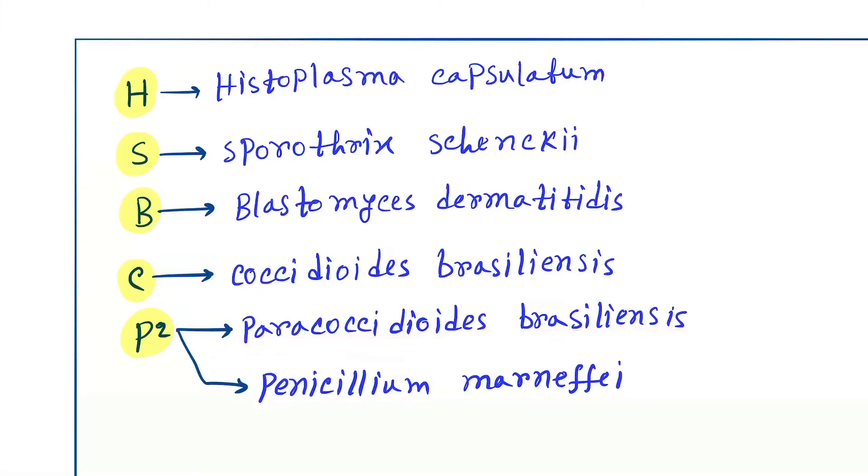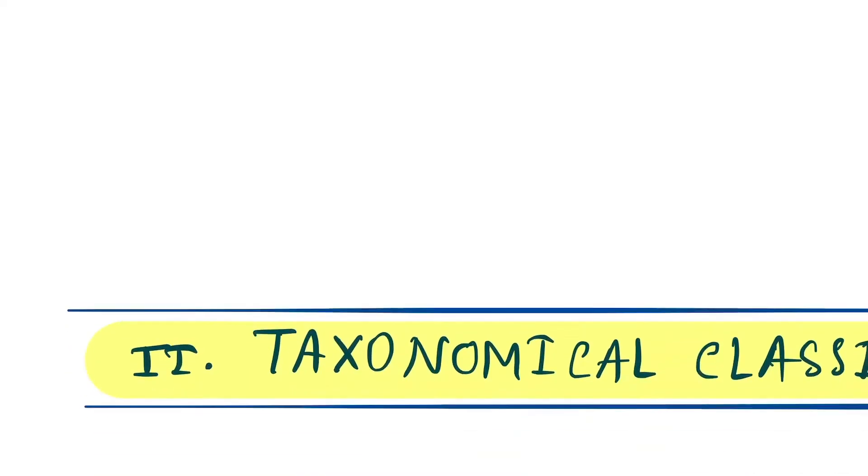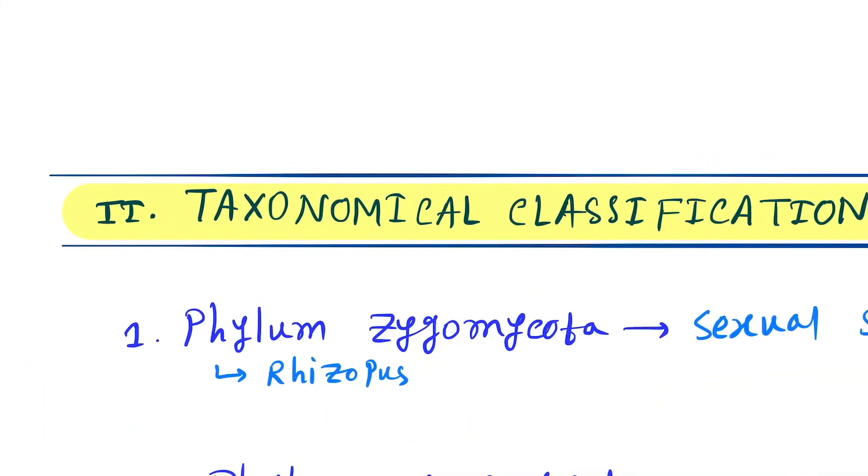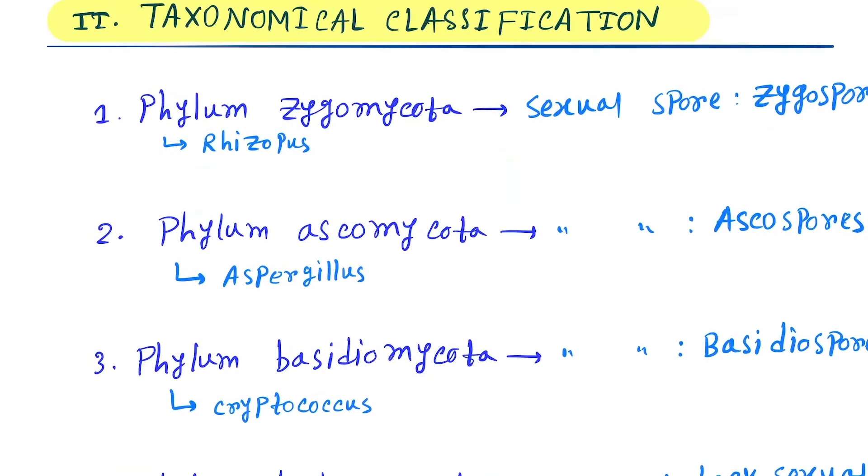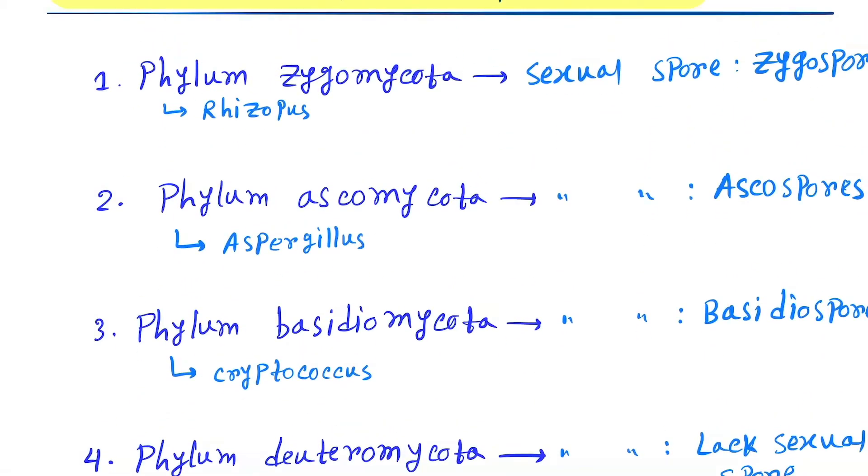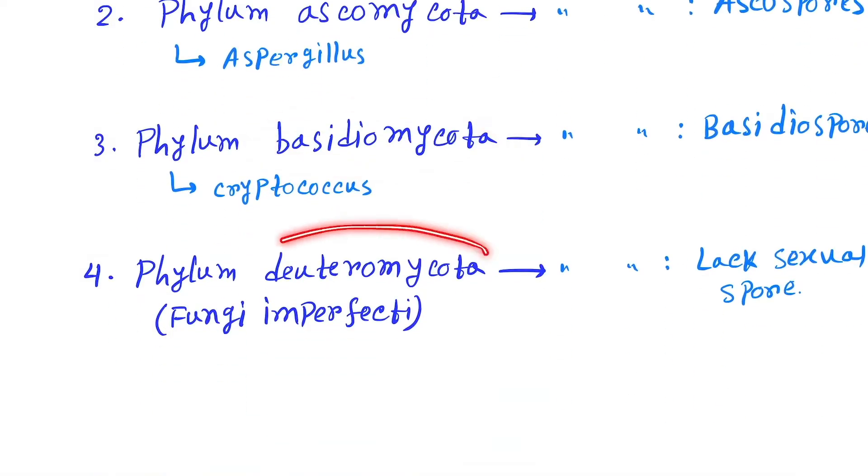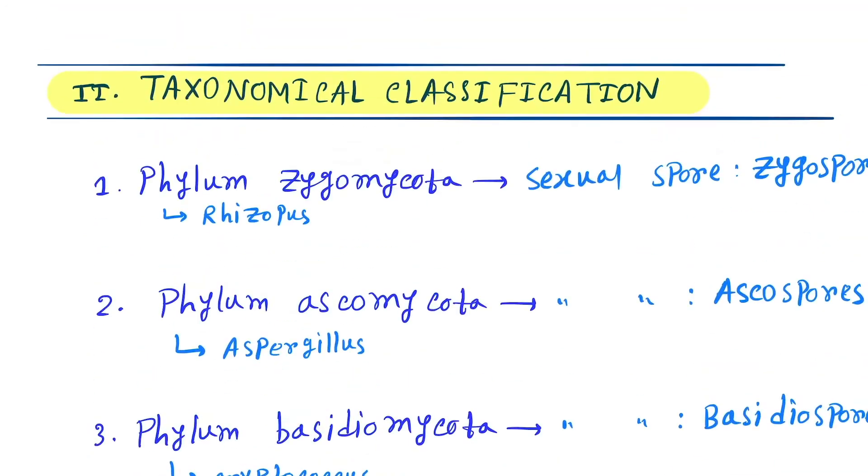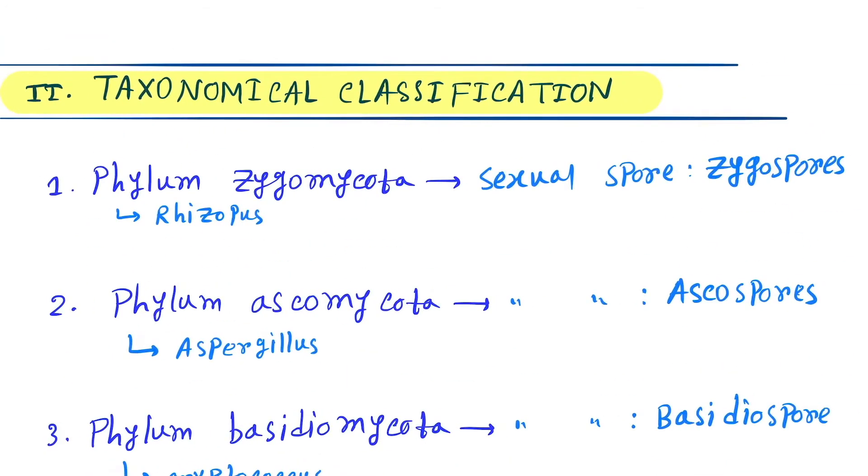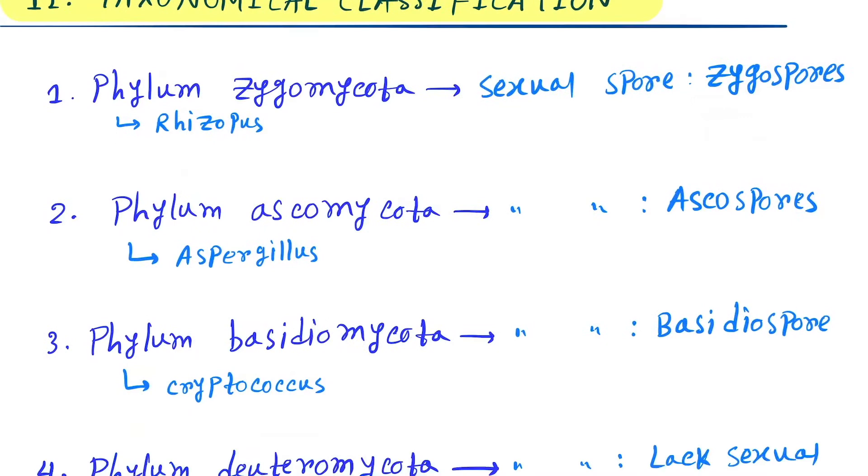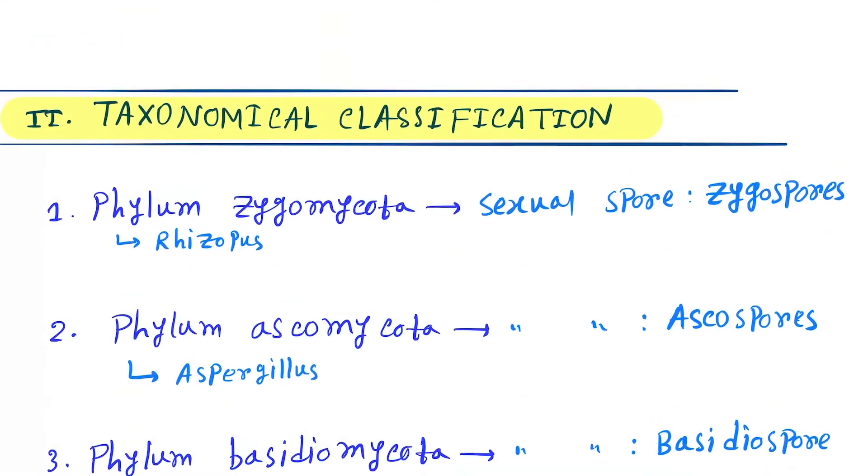Now come to the taxonomical classification. There are mainly four classifications: first one is Phylum Zygomycota, next is Phylum Ascomycota, next is Phylum Basidiomycota, and the last is Fungi Deuteromycota. Phylum Zygomycota - sexual spores are called zygospores. Basically this is based on the classification of sexual spores.